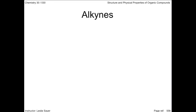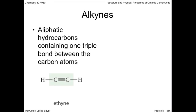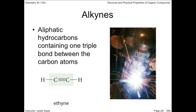Alkynes are essentially the same as alkenes, except for a triple bond. Alkynes have two less hydrogens than alkenes. The simplest alkyne is ethyne. This particular compound is commonly called acetylene, and when ignited with pure oxygen, as in the case of an acetylene torch, it can burn at temperatures higher than 3,000 degrees Celsius.